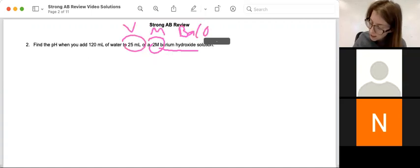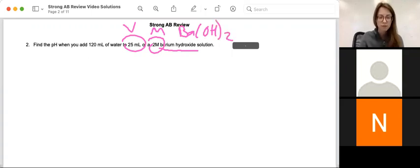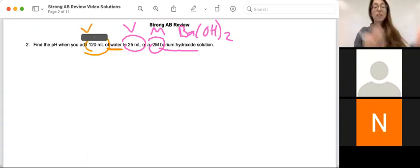We know barium hydroxide is a base, and I'm going to write it out to be sure. I also know that I am adding water to it, and I have another volume. The fact that I'm just adding water to a solution should tell you it's a dilution. How do we dilute things? By adding water.